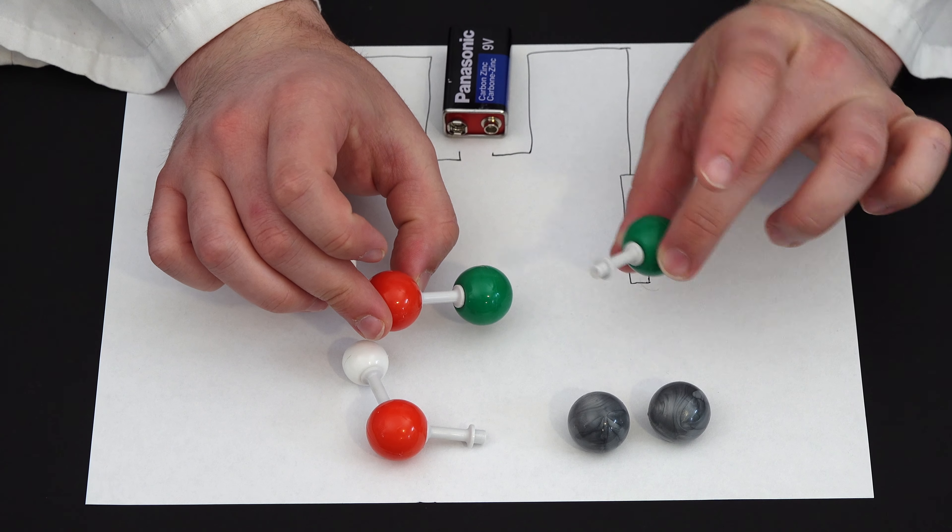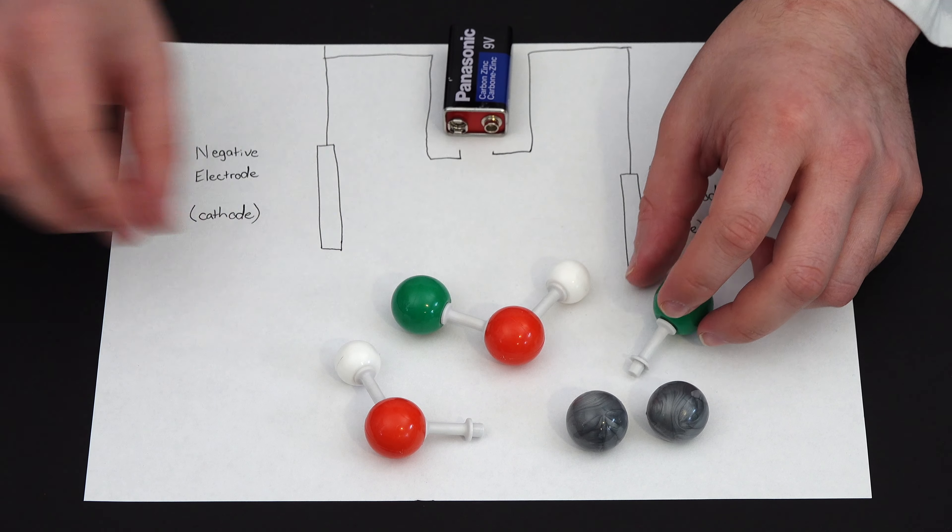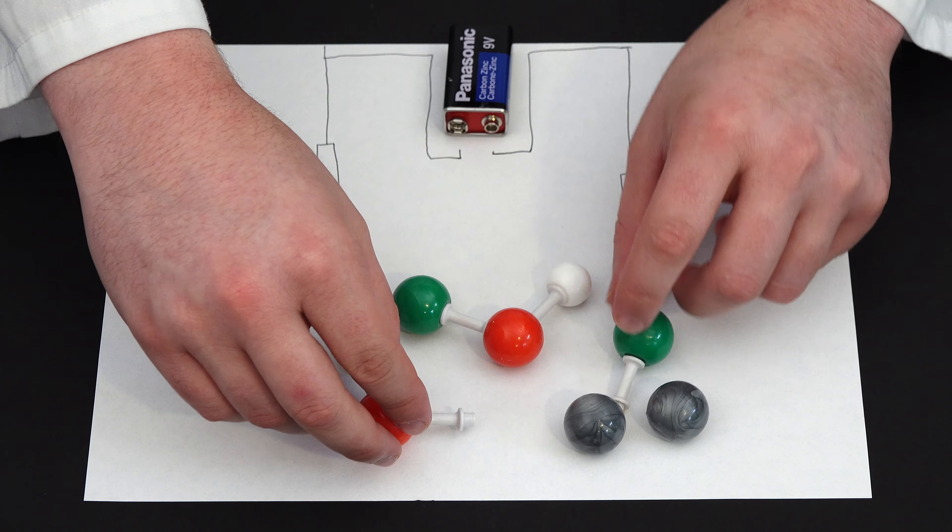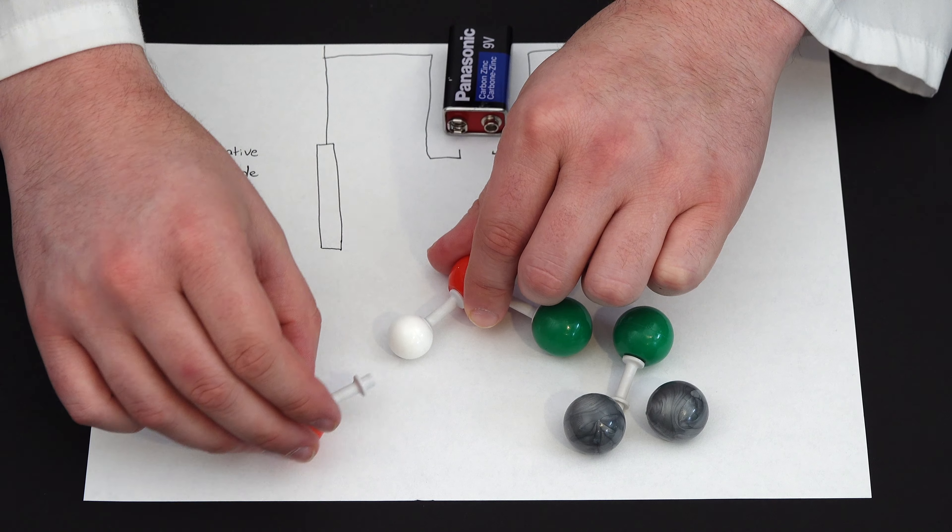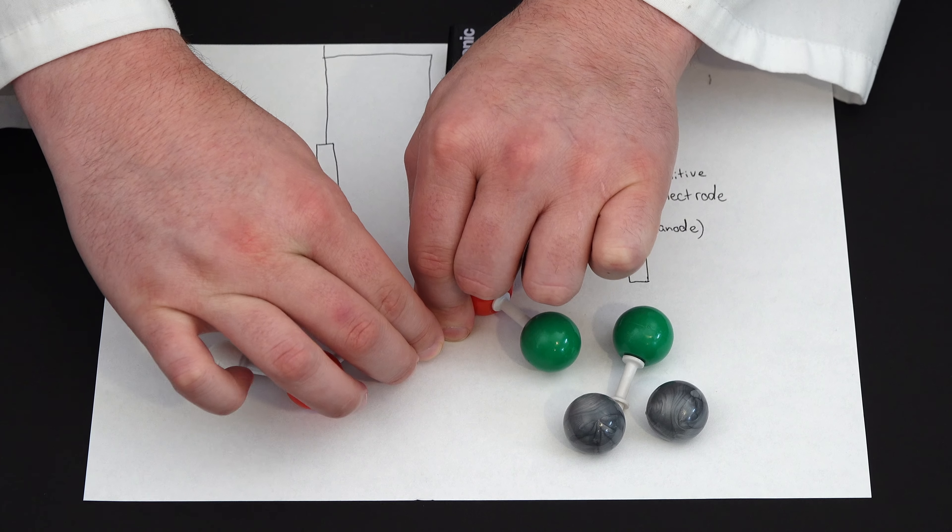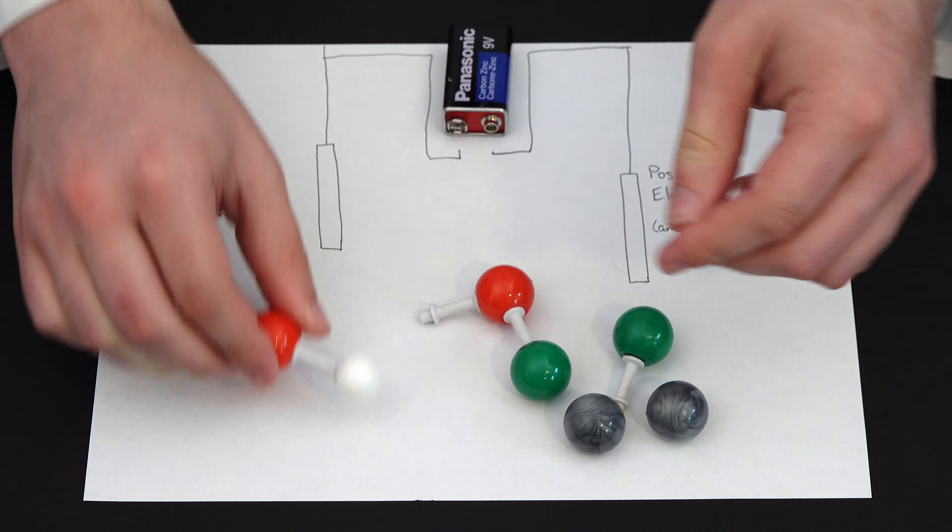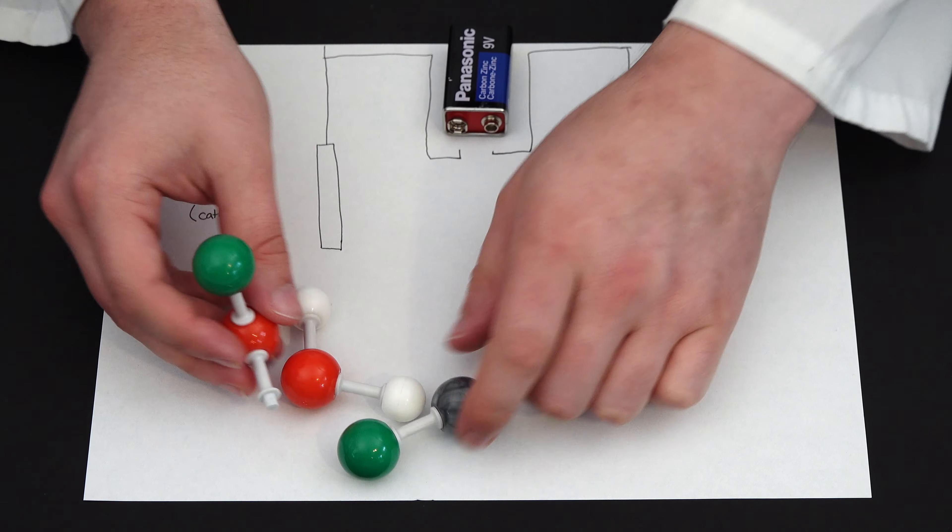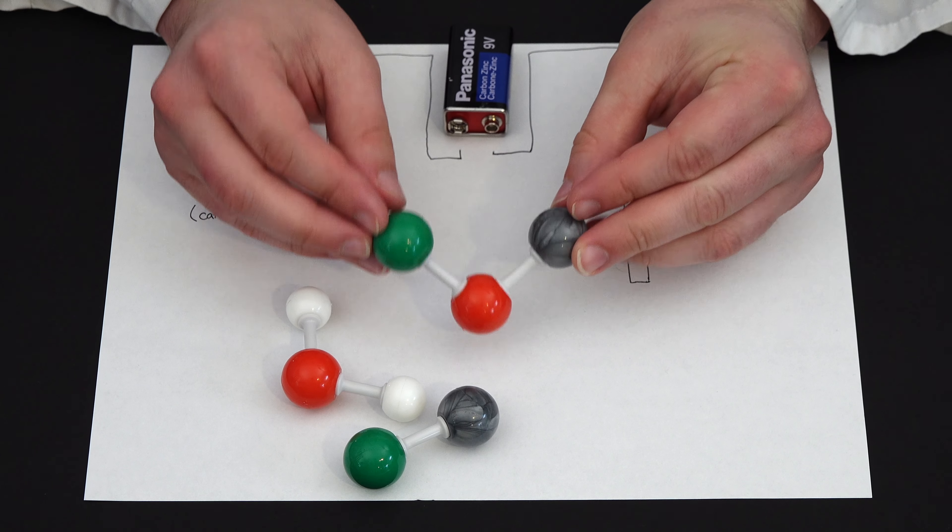So now we have a chloride ion and hypochlorous acid. So hypochlorous acid, of course, is an acid, which means it's going to react with more of our base in solution, the sodium hydroxide. The sodium hydroxide is going to rip off this hydrogen to produce water. And at the end of it, we produce more sodium chloride and this here, sodium hypochlorite.